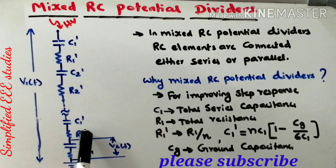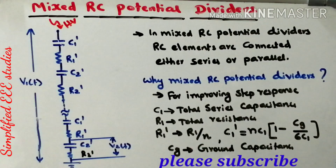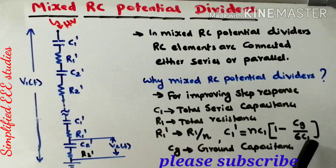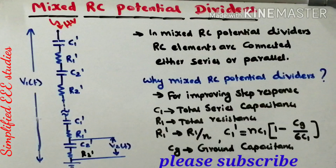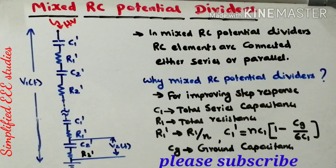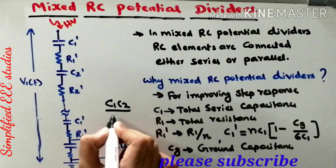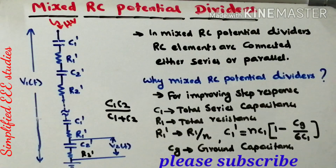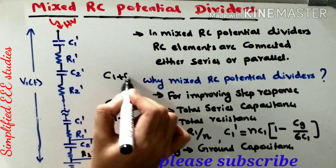By using the calculation, you are able to find the total voltage applied. R1' is nothing but R1 divided by N, where R1 is the total resistance. Similarly, C1' can be calculated using the formula NC1 multiplied by (1 minus CG divided by 6C1), where CG is the ground capacitance. For capacitors in series: C_eq equals C1·C2 divided by (C1 plus C2). For capacitors in parallel: C_eq equals C1 plus C2.